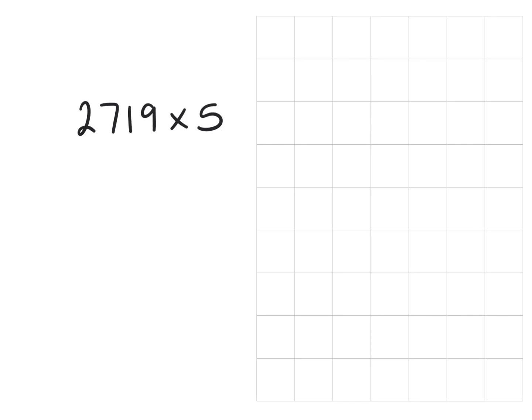So if we place it into our grid 2719, I'm going to multiply that by 5. Set our calculation now into our columns.